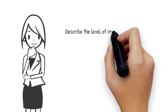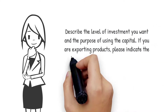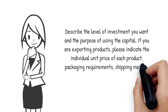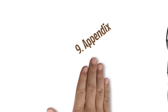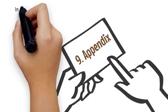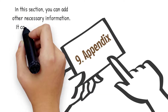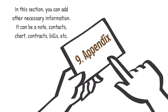Describe the level of investment you want and the purpose of using the capital. If you are exporting products, please indicate the individual unit price of each product, packaging requirements, and shipping method. 9. Appendix. In this section, you can add other necessary information. It can be notes, contacts, charts, contracts, bills, etc.